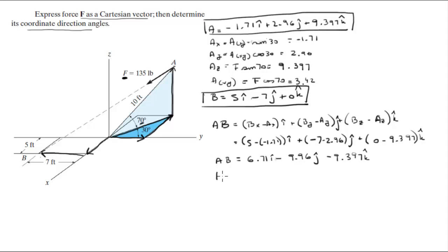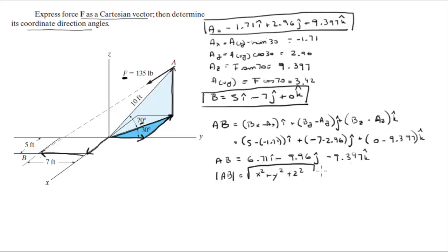Now we need to find the direction angles, and to do that we need to find the magnitude of this vector — basically the magnitude of this dotted line. To do that, we take the square root of the X component squared plus the Y component squared plus the Z component squared using these three values, and we get that the magnitude of AB is equal to 15.25.